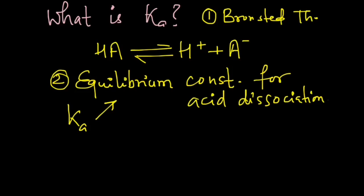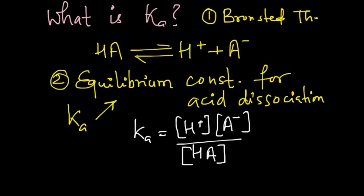So how do we write Ka for this equation? We write Ka equals to the concentration of H plus into the concentration of A minus divided by the concentration of HA. That is Ka, the equilibrium constant for acid dissociation.